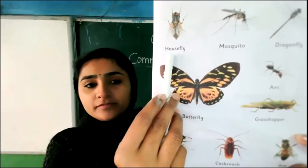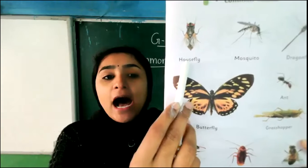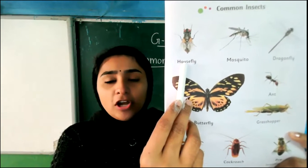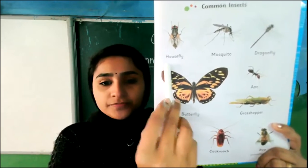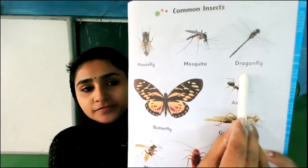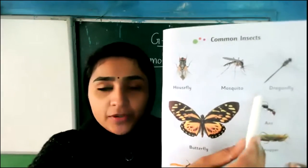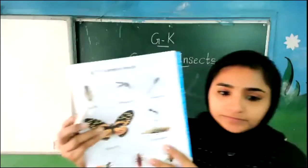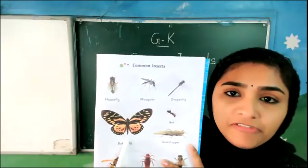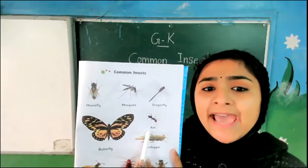So we will learn each name. What is the first one? This is housefly. All of you say: housefly. Mosquito. Dragonfly. Here you can see the picture of a butterfly. Then ant — A-N-T, ant.